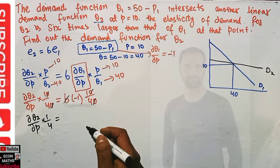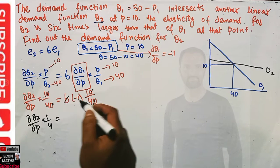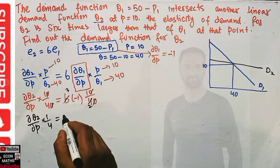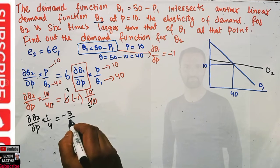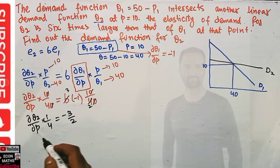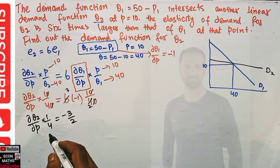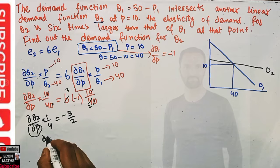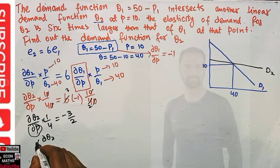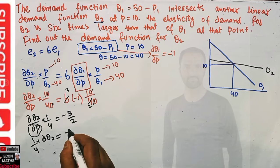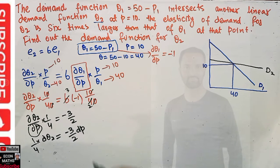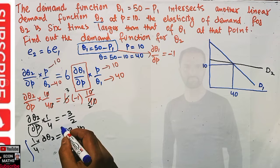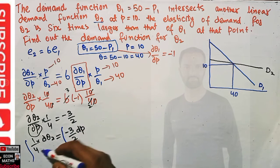Solving this: dq2/dp times 1/4 equals minus 3/2. We can rearrange to get dq2 times 1/4 equal to minus 3/2 dp, transposing dp to the right-hand side. Now we integrate both sides of this expression to find the demand function q2.